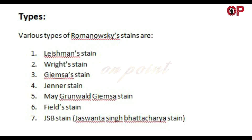Types. Various types of Romanowski's stains are: 1. Leishman's stain, 2. Wright's stain, 3. Giemsa's stain, 4. Jenner's stain, 5. Megrünwald-Giemsa stain, 6. Field's stain, 7. JSB stain — Jaswant Singh Bhattacharya stain.